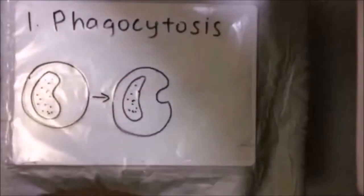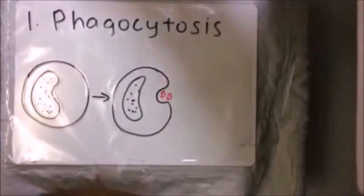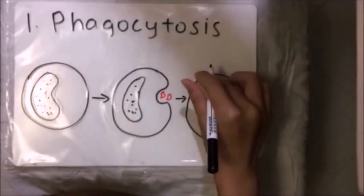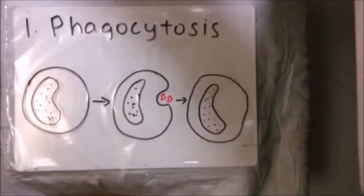After consuming the germs, the monocytes take parts of those germs called antigens and mount them outside their body like flags. Other white blood cells see these antigens and make antibodies designed to kill those specific types of germs, so these germs can never harm the body again because they have been identified.